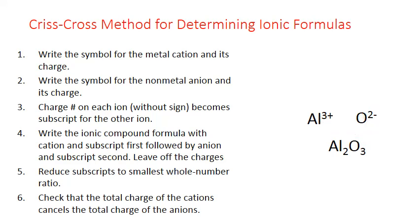2 and 3 is already the lowest whole number ratio, so we can't reduce it further. We can double-check the charges: two aluminums each with a +3 charge gives a total positive charge of +6, and three oxygens each with a −2 charge gives a total negative charge of −6. Plus 6 and minus 6 balance each other out, confirming Al₂O₃ is the correct ionic formula for aluminum oxide.